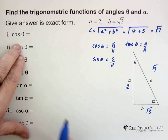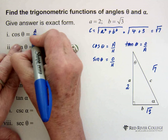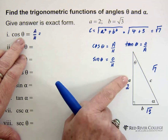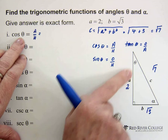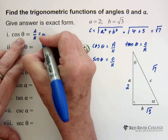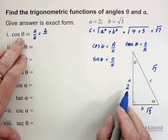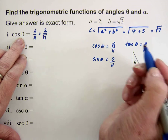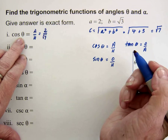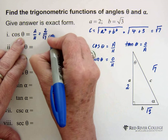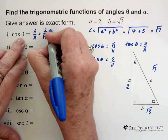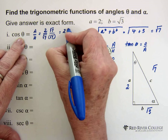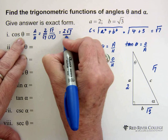So the cos of the angle is adjacent over hypotenuse. The angle is theta, so the side that's adjacent — the side touching this angle — is A, which is 2. And the hypotenuse is the square root of 7. Now normally you don't leave a radical in the denominator, so what you do is multiply top and bottom by the square root of 7. You end up with 2 times the square root of 7 over 7. That should be your answer.